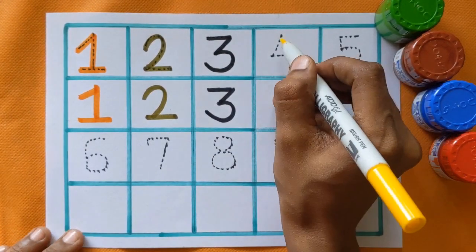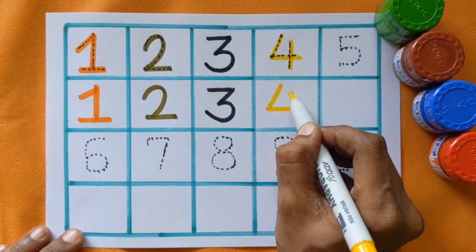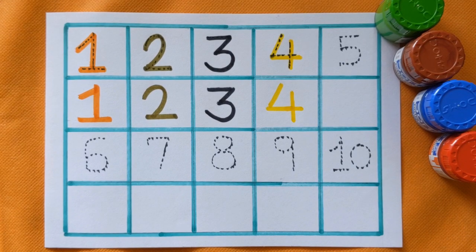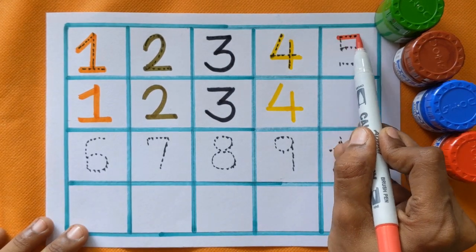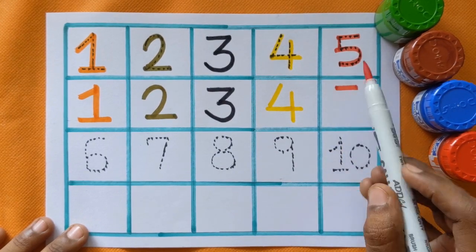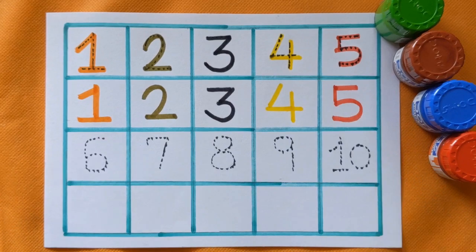Next is number 4, number 4 with yellow color. After number 4, which number is this? Number 5, number 5 with the red color.